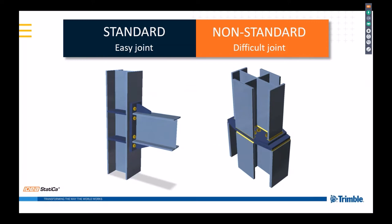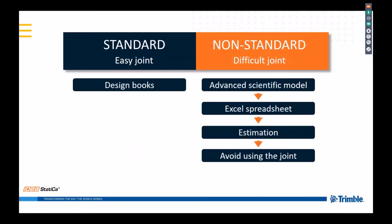In steel projects, we have two types of joints. We have the standard, easy joints, and then we have the non-standard, difficult ones. For the standard, we know very well how to deal with them. We have design guides, predefined examples, and past experience. As long as we stay within these predefined templates, the design is rather easy.